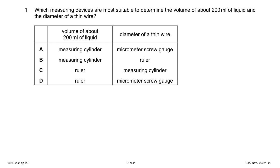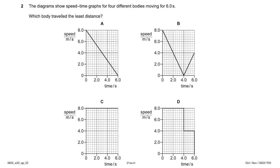They are asking which devices are most suitable to determine the volume of about 200 ml of liquid and the diameter of a thin wire. We need a measuring cylinder to measure the volume of 200 ml of liquid. To measure the diameter of a thin wire, a ruler would not be accurate, so we use a micrometer screw gauge. The answer is: measuring cylinder for volume, micrometer screw gauge for diameter. So it's A.